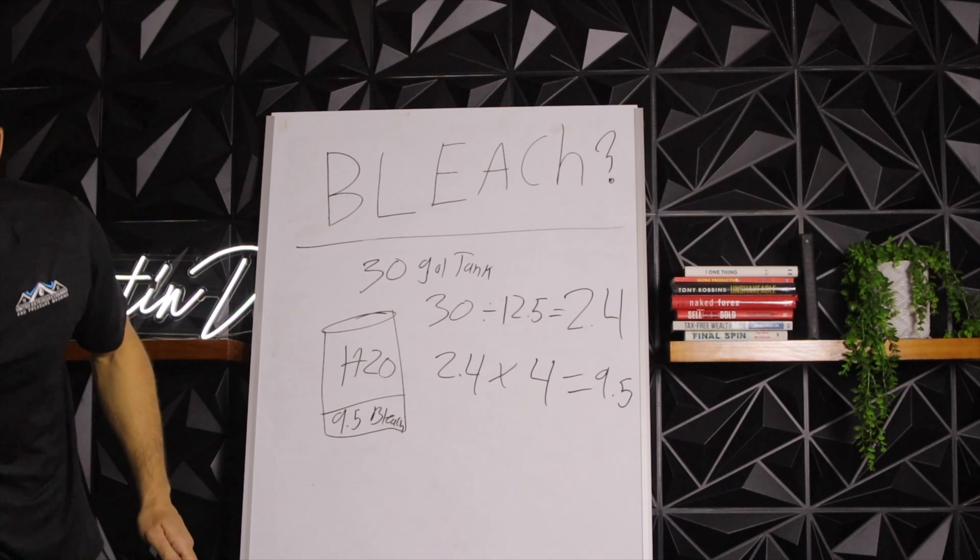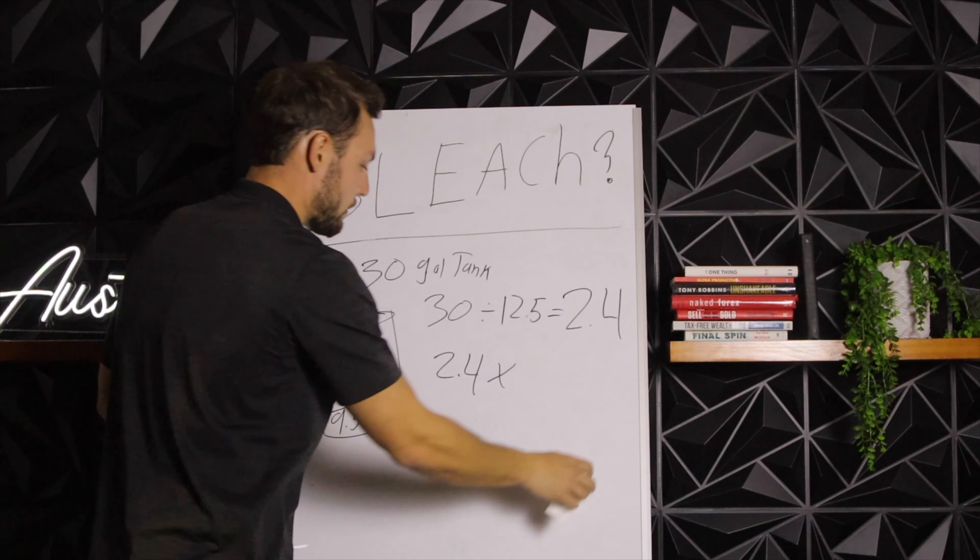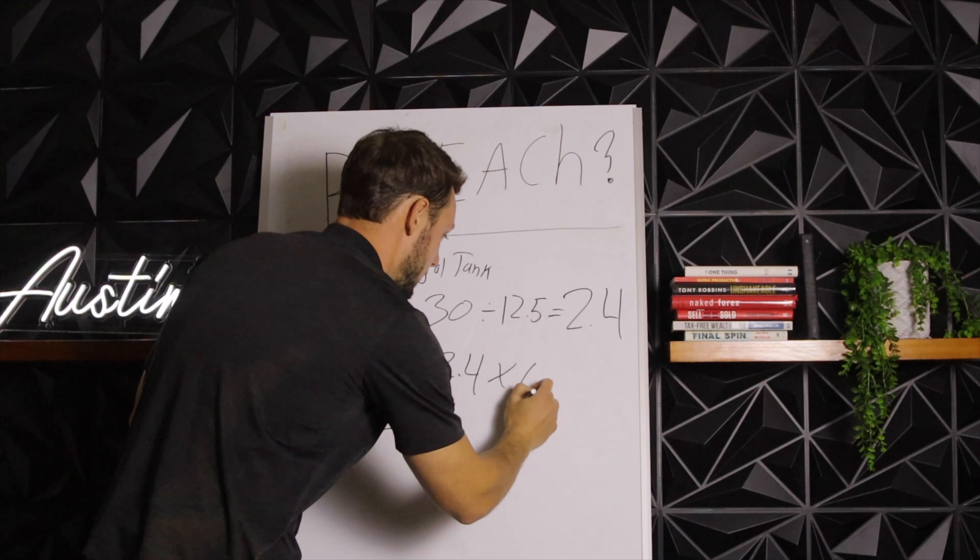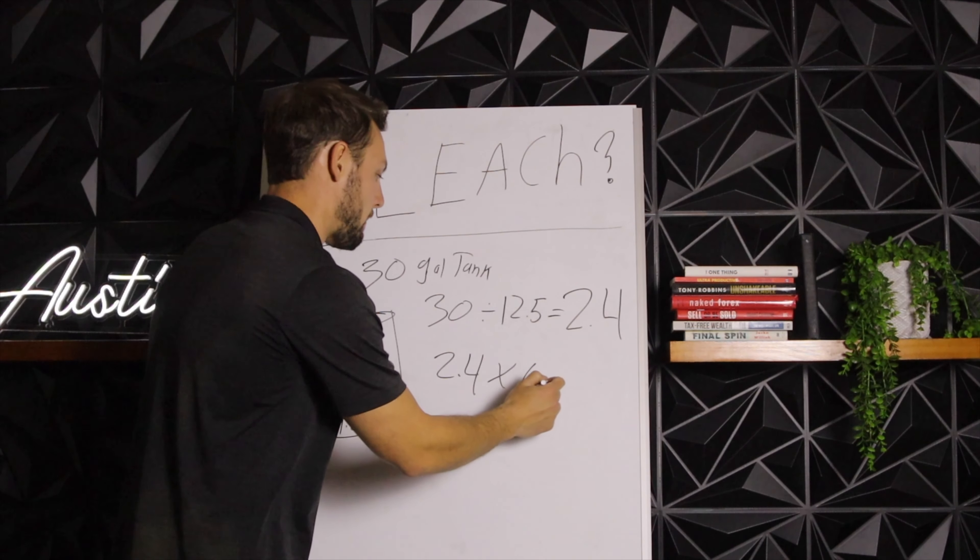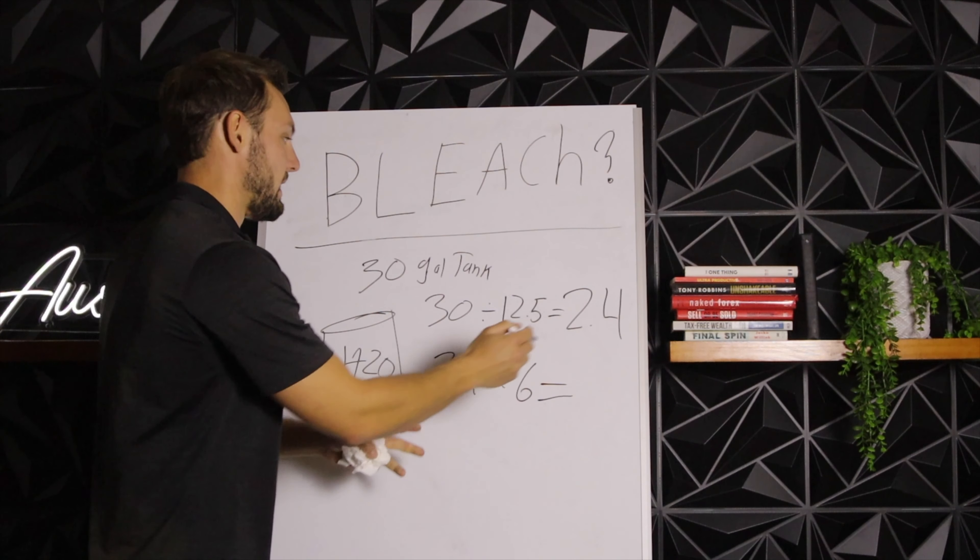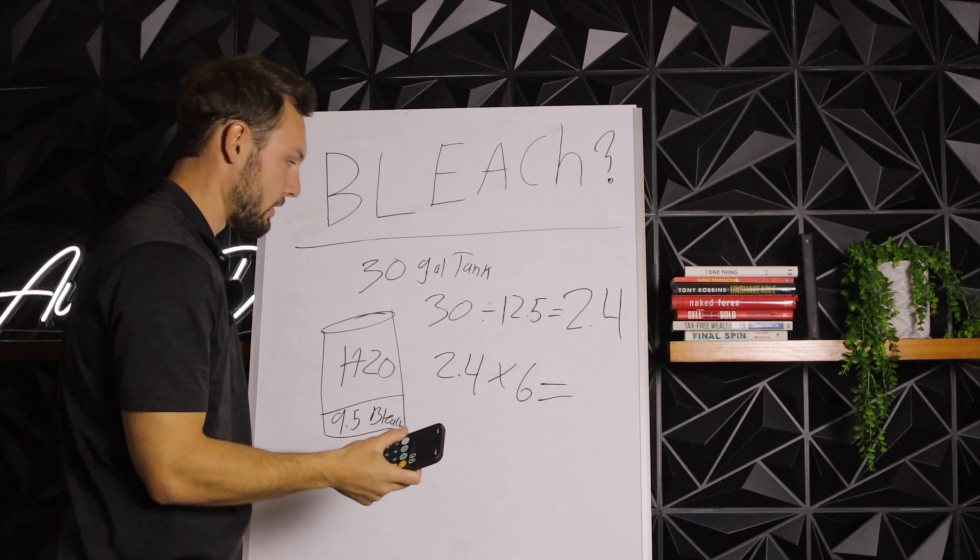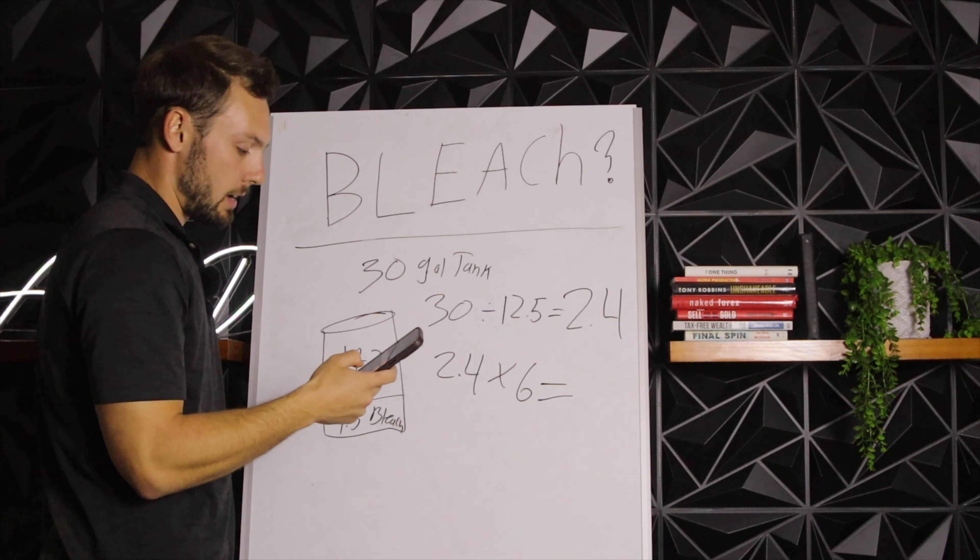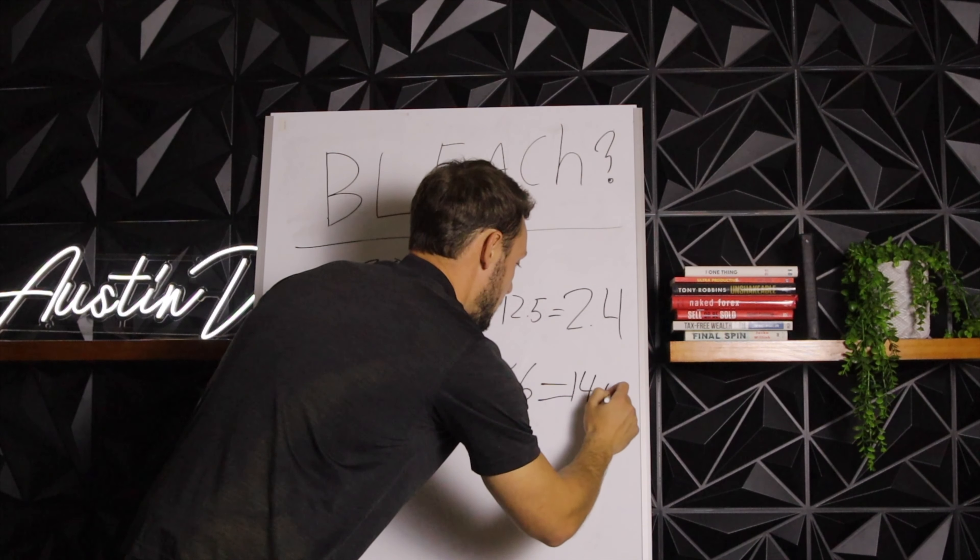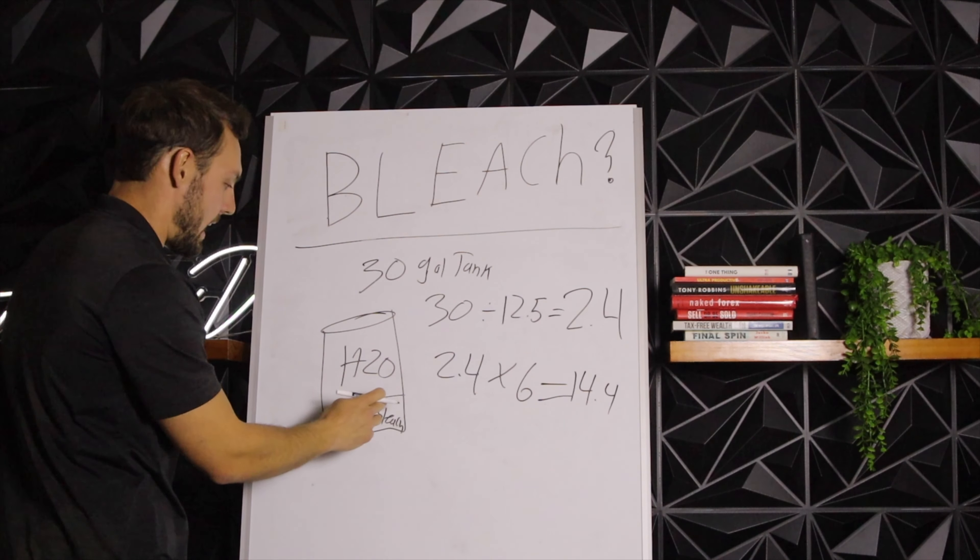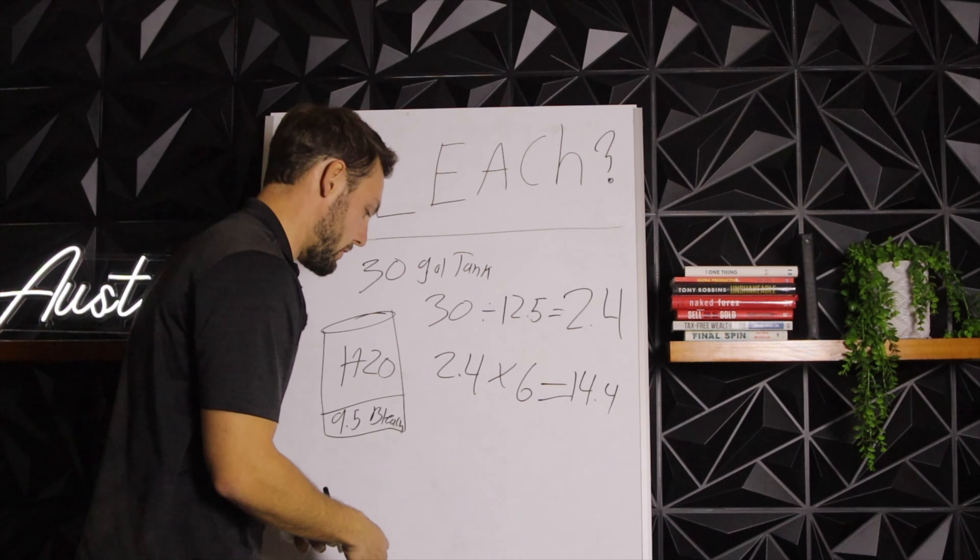So we can do 6%. This is going to be very easy. This number should be about 15 because we know that 6% is half of 12.5, pretty much. So if I do 2.4 times 6, look, it's giving us 14.4. In other words, fill half of this with bleach, half with water. You'll get a 6% solution.